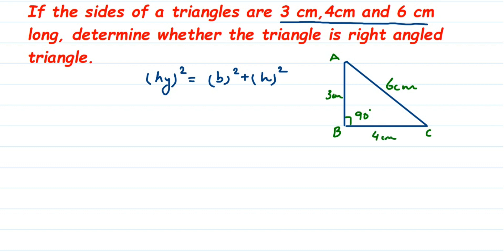We are going to substitute in this Pythagoras theorem and we will see if LHS and RHS are same. If they are same, then we can say that yes, this will form a right angle triangle. If they are not same, then it will not form a right angle triangle.